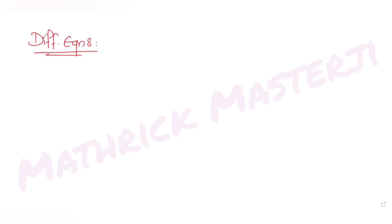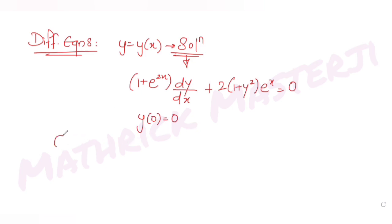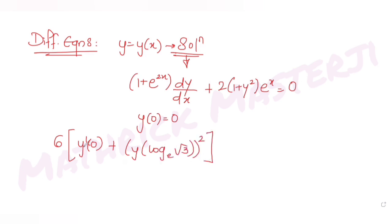Today's question is from the topic of differential equations. If y = y(x) is a solution of the differential equation (1 + e^(2x)) dy/dx + 2(1 + y²)e^x = 0, and y(0) = 0, we need to find the value of the expression 6·y'(0) + [y(log√3 base e)]².